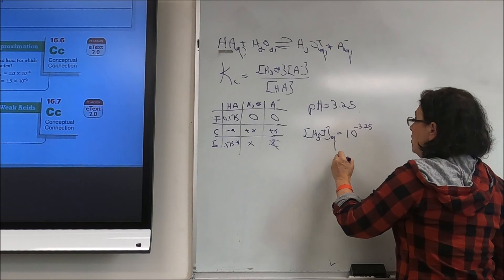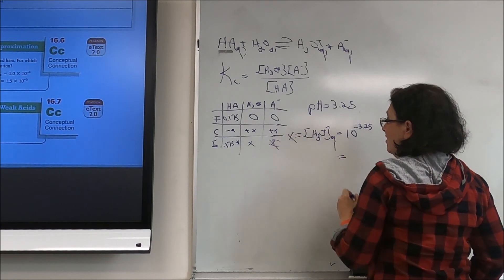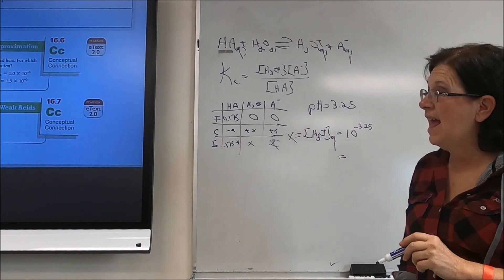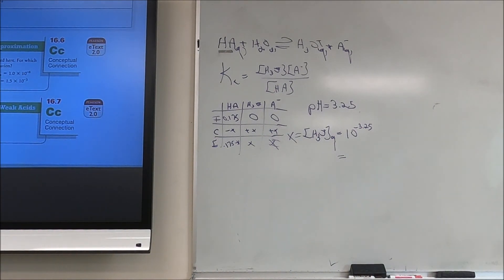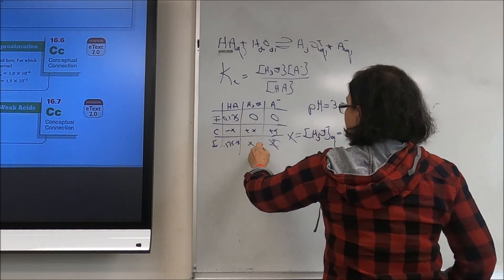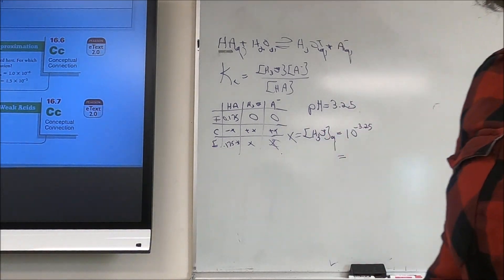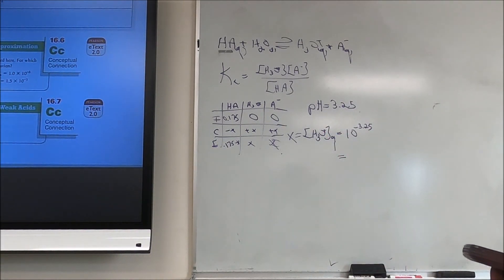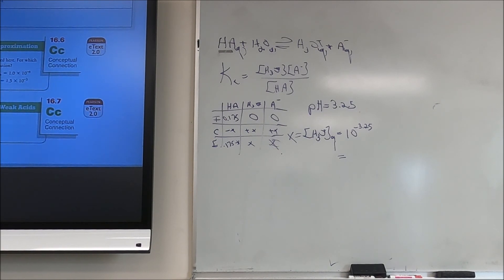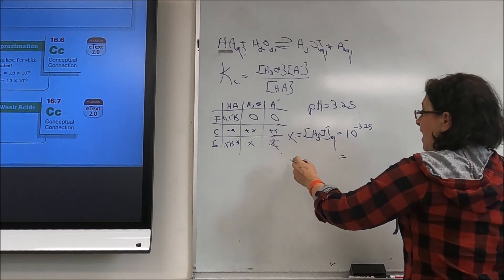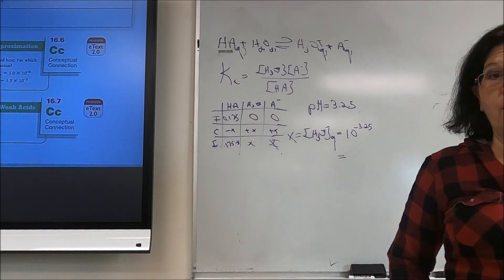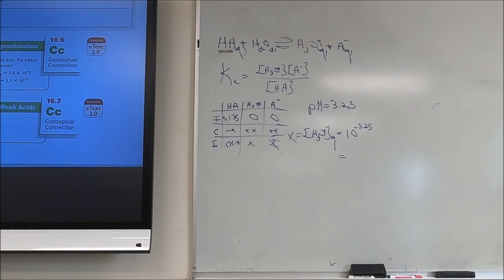Once you calculate x from the pH, you have all equilibrium concentrations and you plug them into the KA expression to solve. That's how the problem is set up — you should be able to finish it with your calculator.